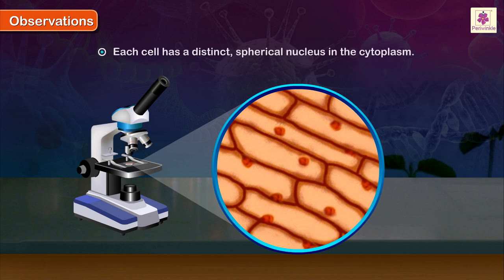Each cell has a distinct spherical nucleus in the cytoplasm. A large central vacuole is seen in every cell. No intercellular space is seen.